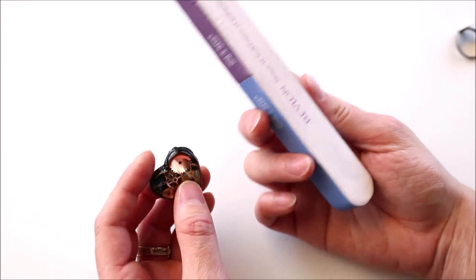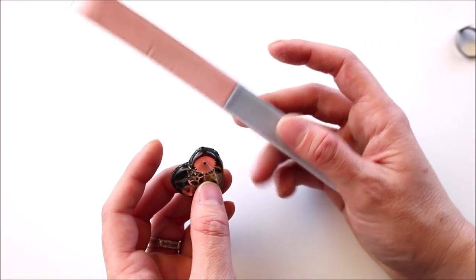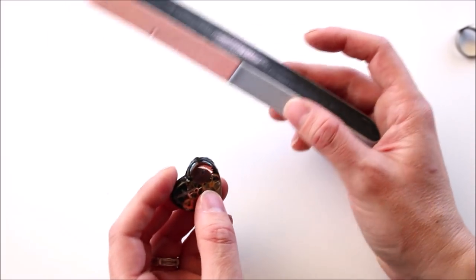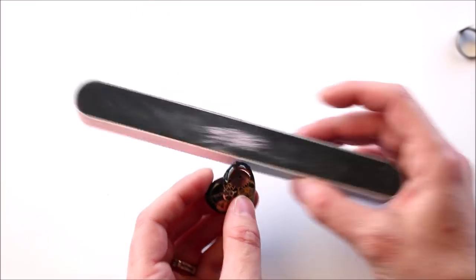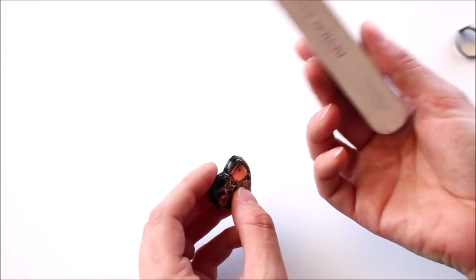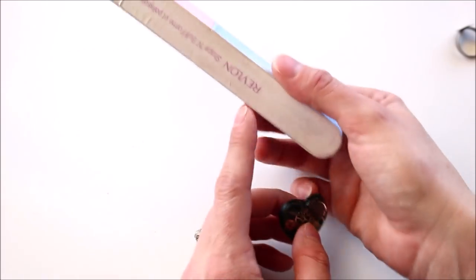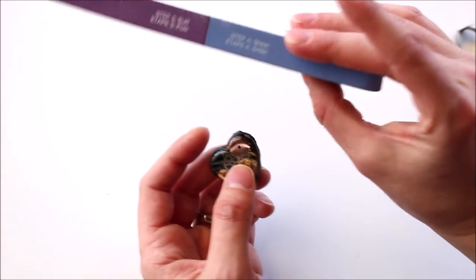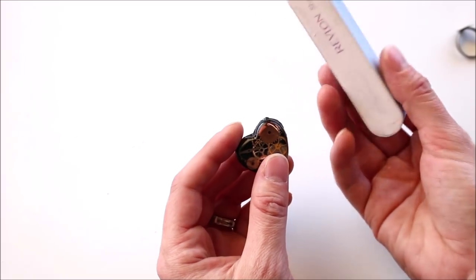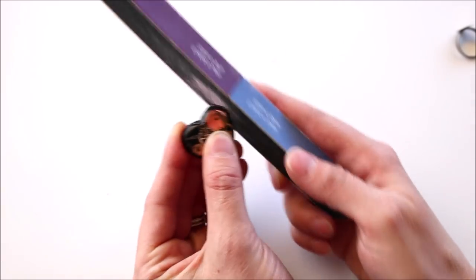This is a nail file. I have a video called Resin Crafting Tools I Can't Live Without. And I talk about this. And I know you can use other things to file down resin. I just really like using files like this because you have a coarse side and you have a finer side and varying degrees of finer grit. So I'm going to go ahead and just file this down.